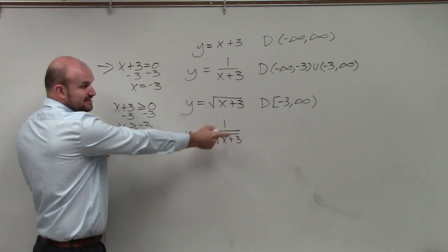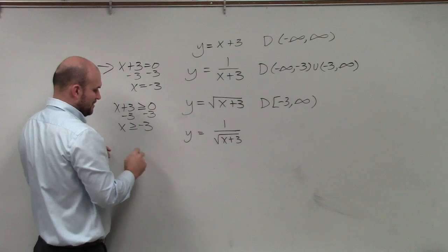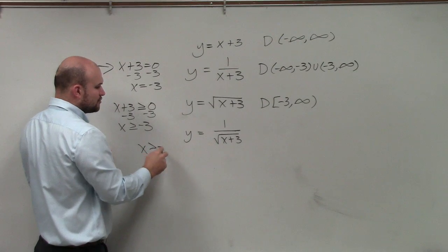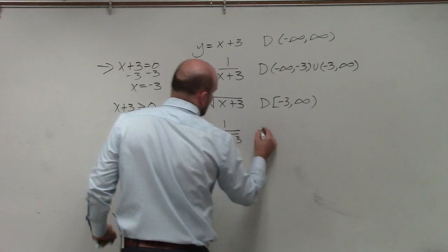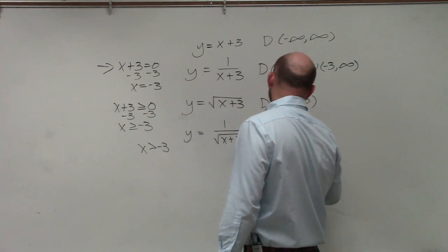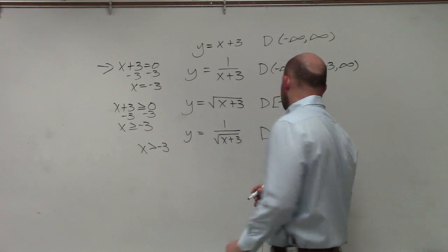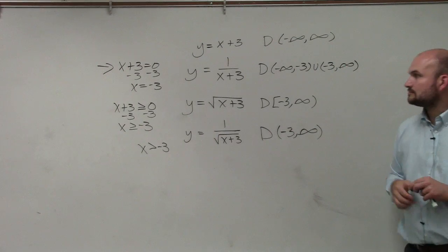Because if that's equal to 0, then the denominator is equal to 0. So what it looks like is x is just greater than negative 3. So in our domain, the way that we write that is negative 3 to infinity.